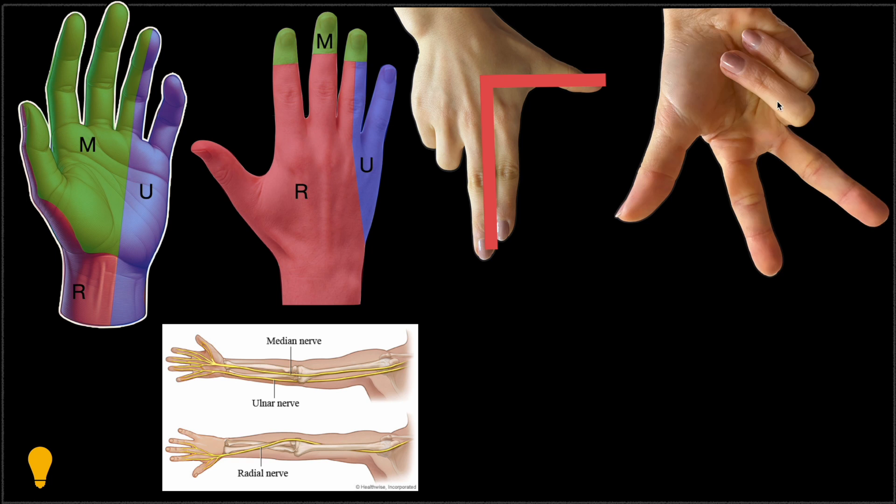Next you can see my palmar surface of my hand. So you can see one, two, three, first, second and third fingers. The innervation is median nerve. Don't forget about the palmar surface of the ring finger. So here you can see the letter M.